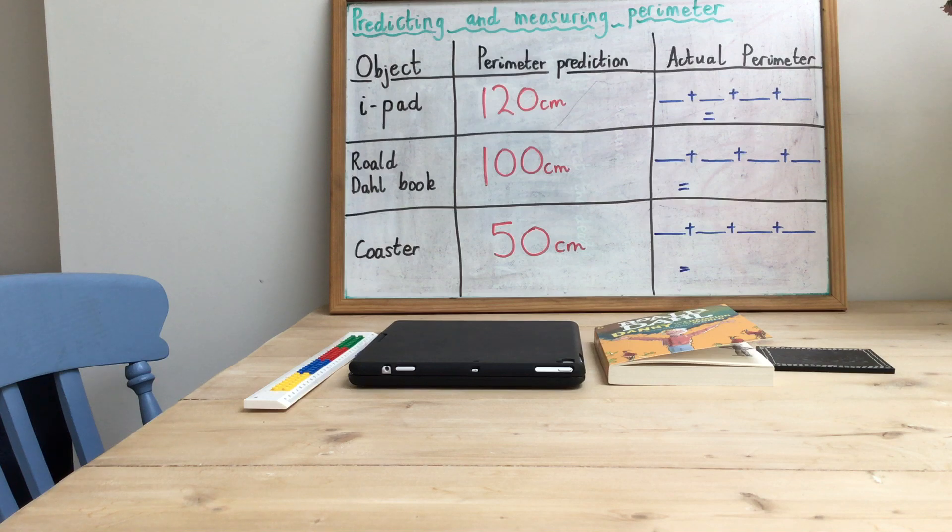So I've chosen three objects that I'm going to measure. I've chosen my iPad, I've chosen the Roald Dahl book Danny the Champion of the World that we're reading, and I've chosen a coaster. Now I am going to measure perimeter using centimeters because I've got a ruler at home, and if you do have a ruler at home, I suggest that you also measure in centimeters using a ruler.